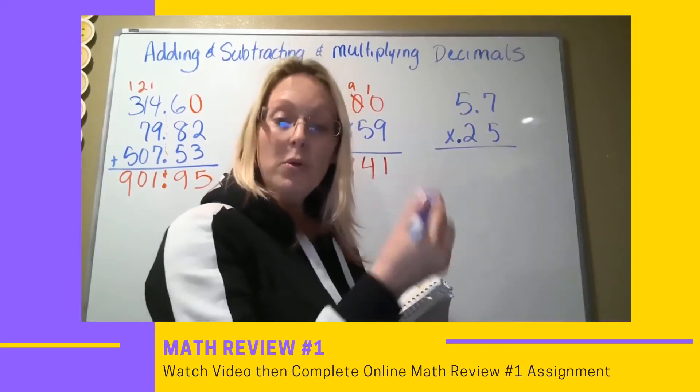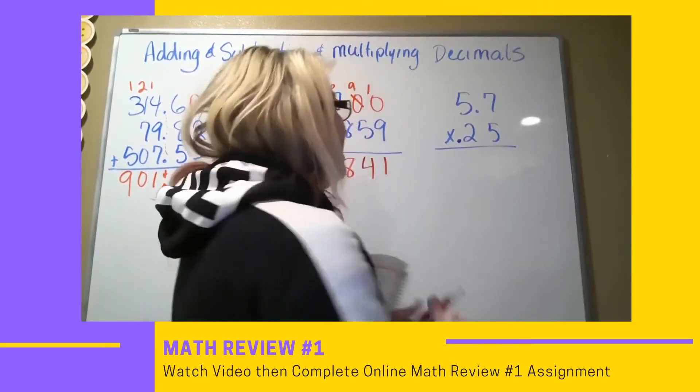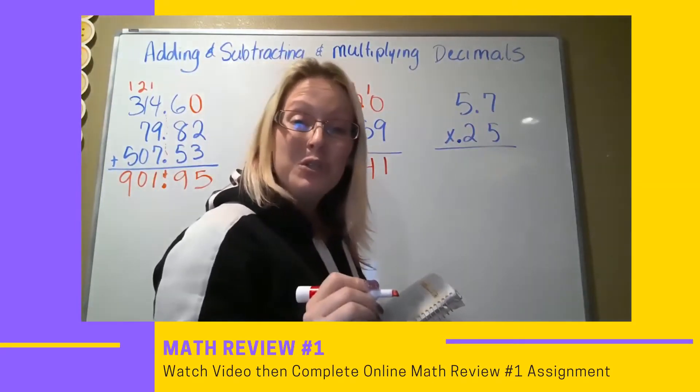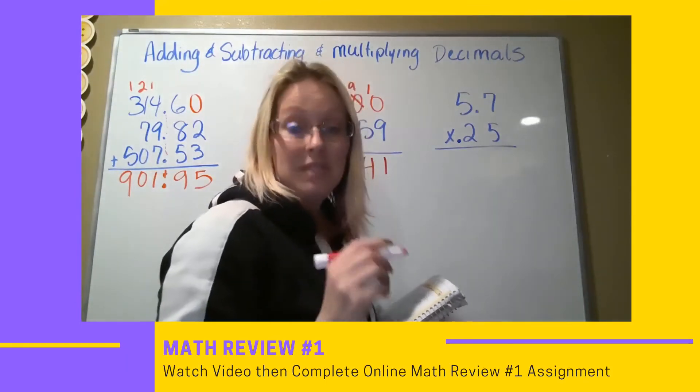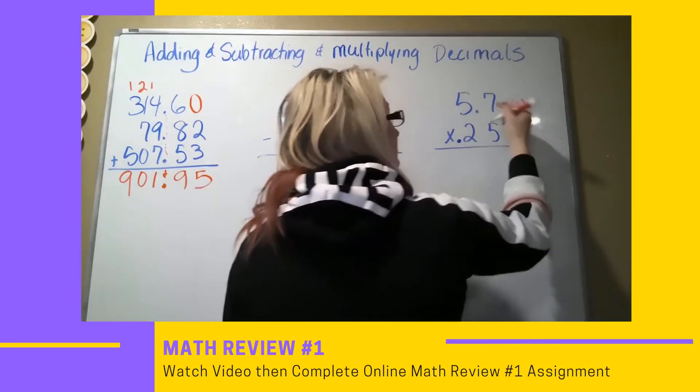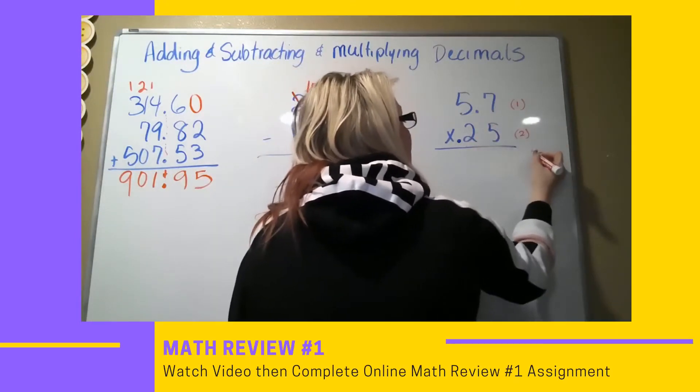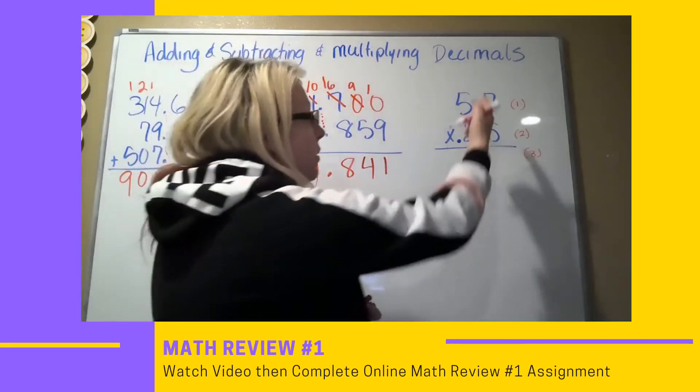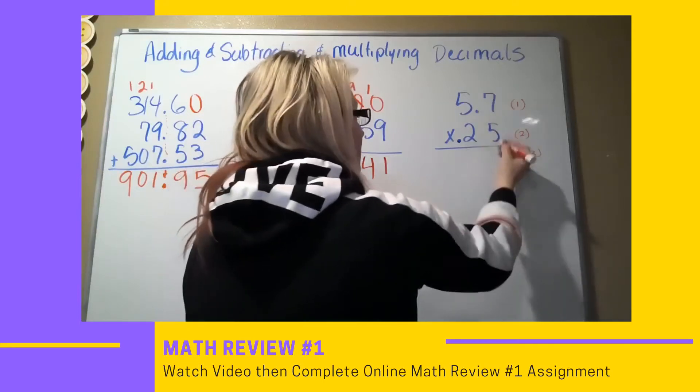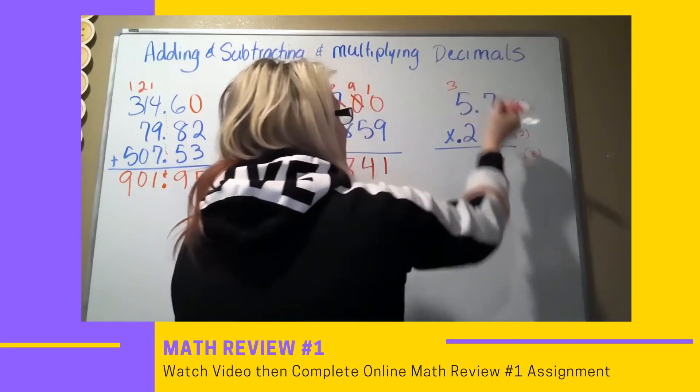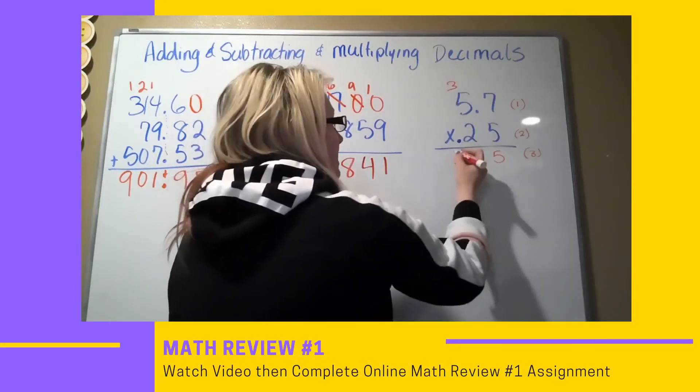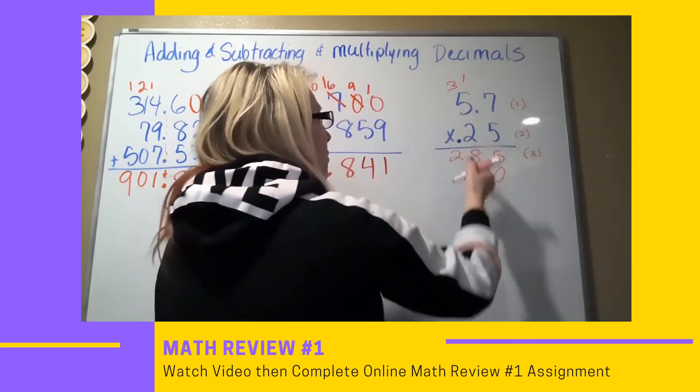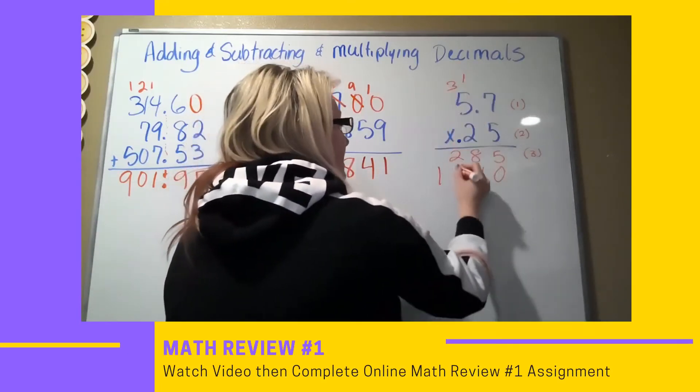Now we're going to do multiplying of decimals. As you can see here, I don't have my numbers lined up, which is okay. But what we have to do is count how many place values of decimals we have. So here we have 1, and here we have 2, which means we would have 3 place values in our answer. Then we go ahead and we multiply. 7 times 5 is 35. 5 times 5 is 25, plus 3 is 28. 2 times 7 is 14. Don't forget my 0. Carry my 1. 2 times 5 is 10, plus 1 is 11.